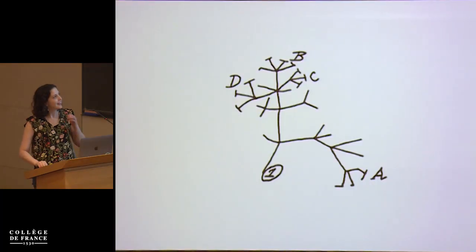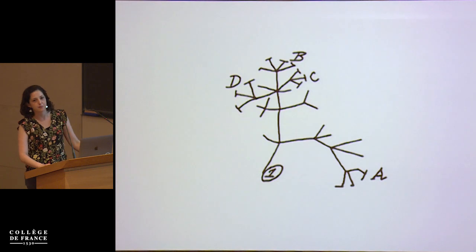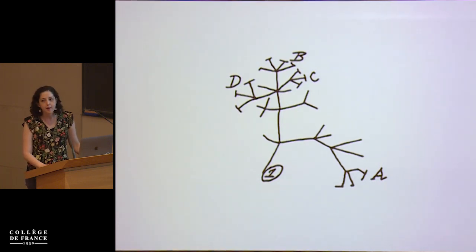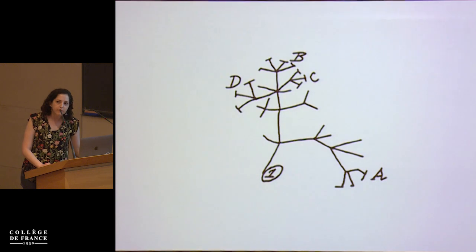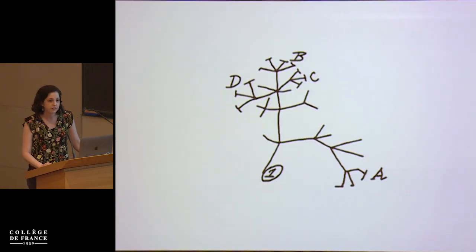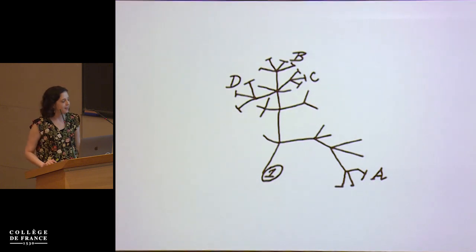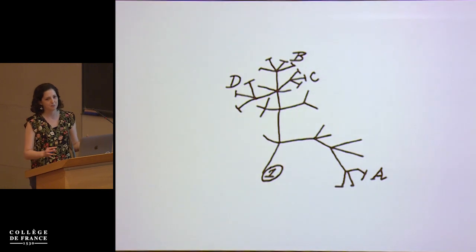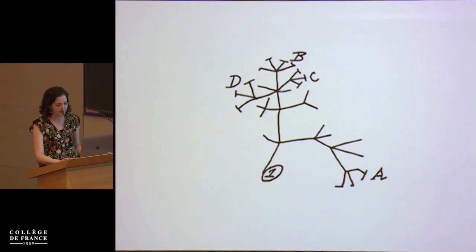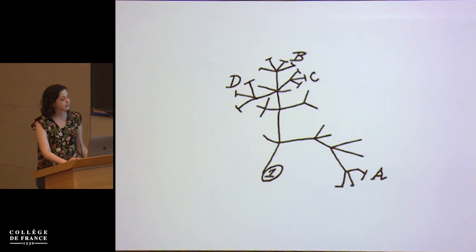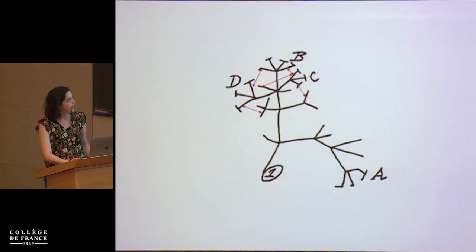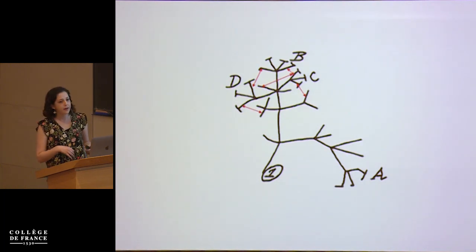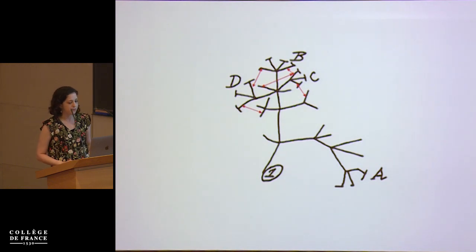From early in our history, evolutionary biologists have thought of speciation in terms of a branching tree. But even at the time of Darwin, we realized that this was an oversimplification of the process of divergence between lineages. And as you've heard in talks today, it's only recently that we've come to a full appreciation of how much of an oversimplification this was. If we were to redraw this classic figure in evolutionary biology today, we might characterize it more like a sort of web of gene flow occurring before, during, and after divergence between lineages.